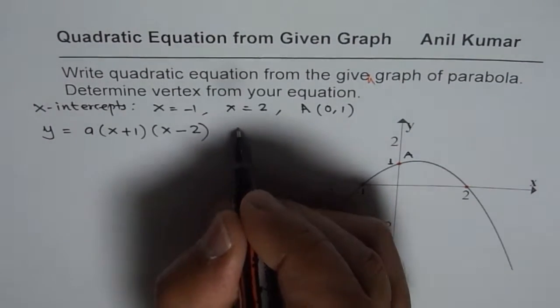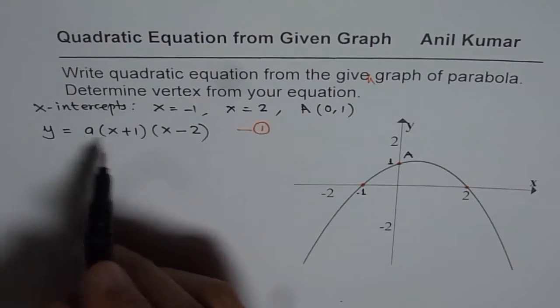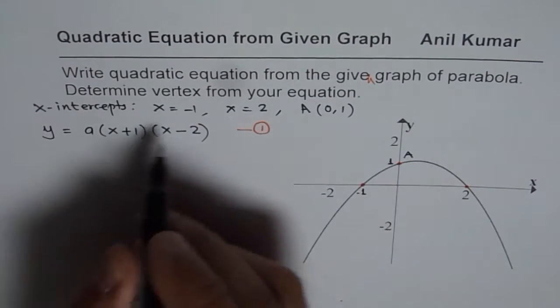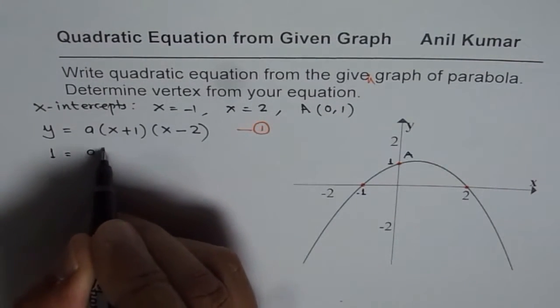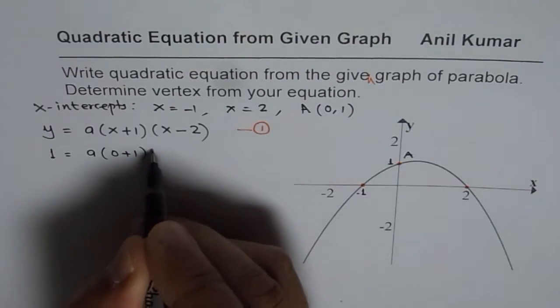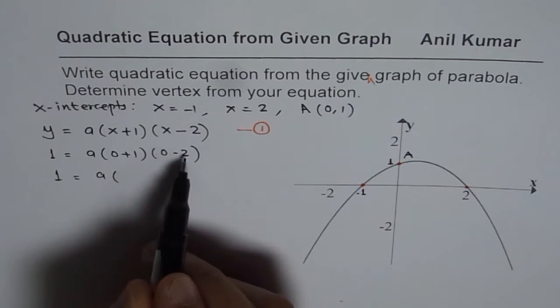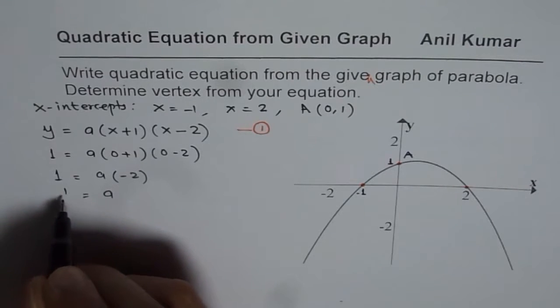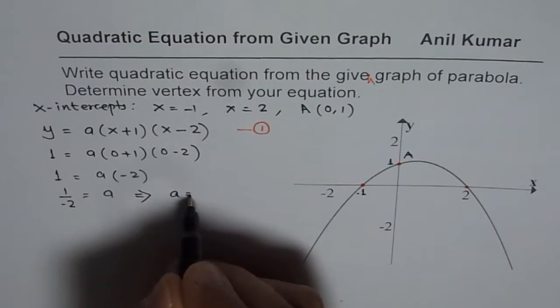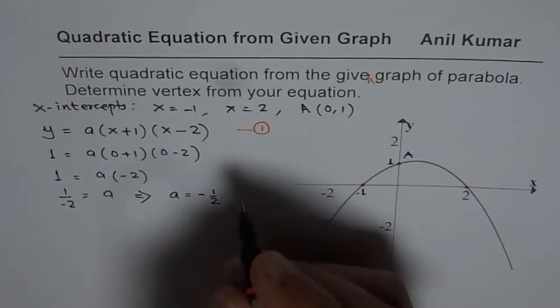Now here we need to find A. To find A we will use the y-intercept, zero, one. So zero is x value, y value is one. So we get one equals A times zero plus one times zero minus two. So one equals A times one times minus two is minus two. Or we get A equals one over minus two. So A is equals to minus half. Let me call this as equation two.